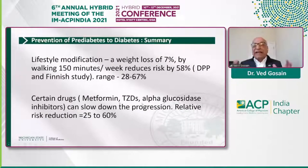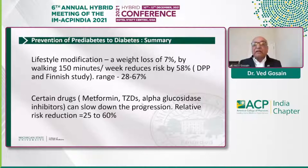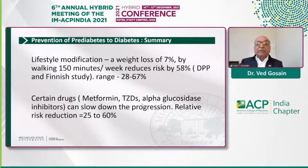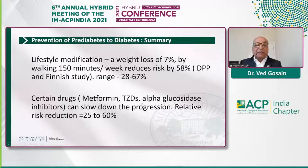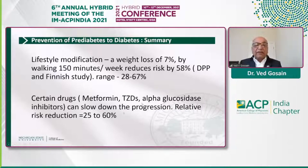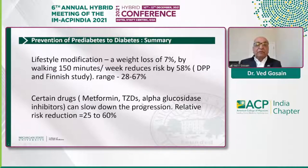To summarize: lifestyle modification consisting of approximately 7% weight loss through walking about 150 minutes per week reduced the risk by about 58%, with a range of 28% to 67%. Although we haven't discussed it in detail, many drugs — thiazolidinediones, metformin, alpha-glucosidase inhibitors — can also reduce the risk by about 25% to 60%.